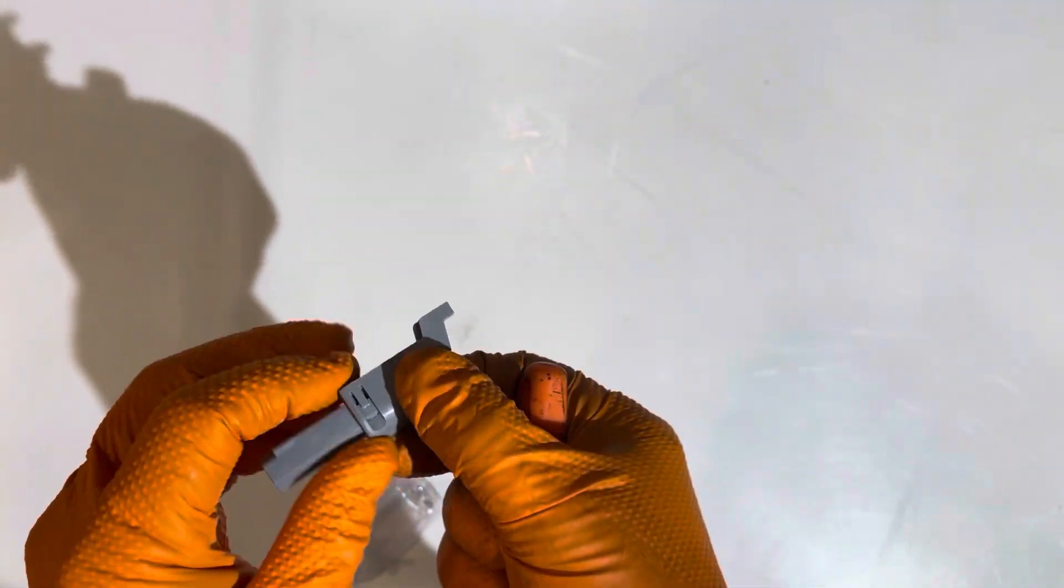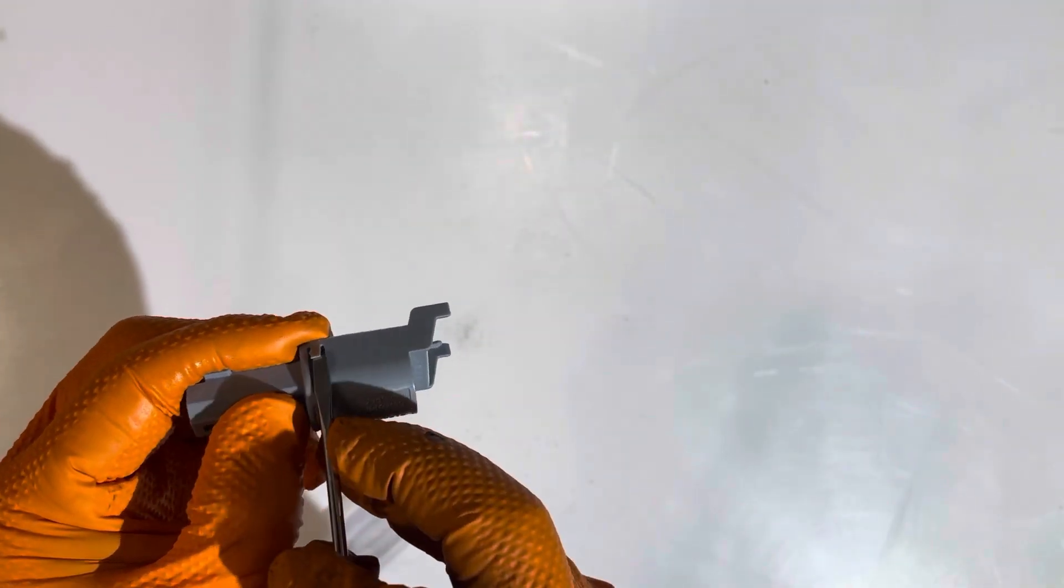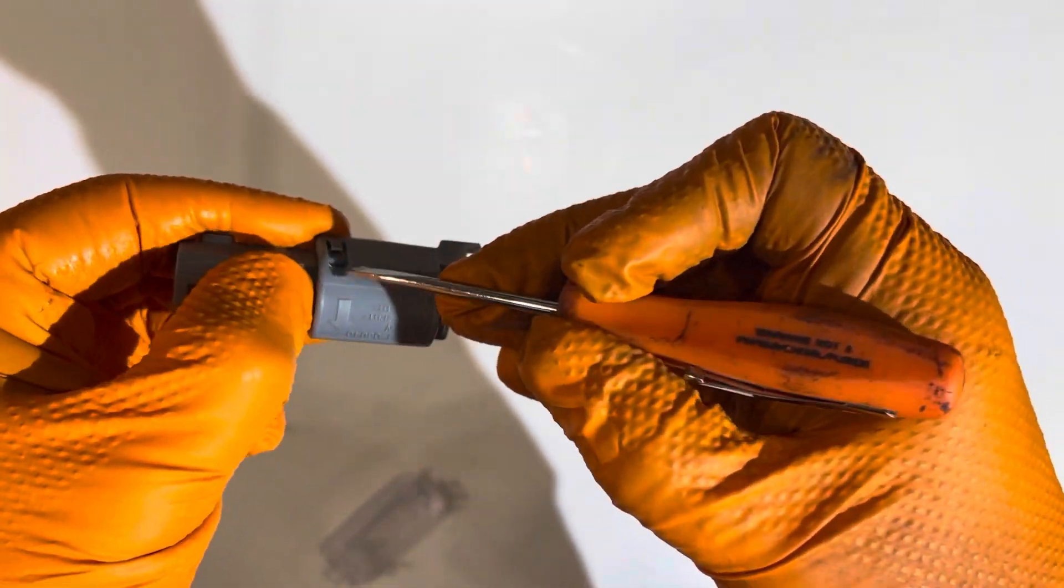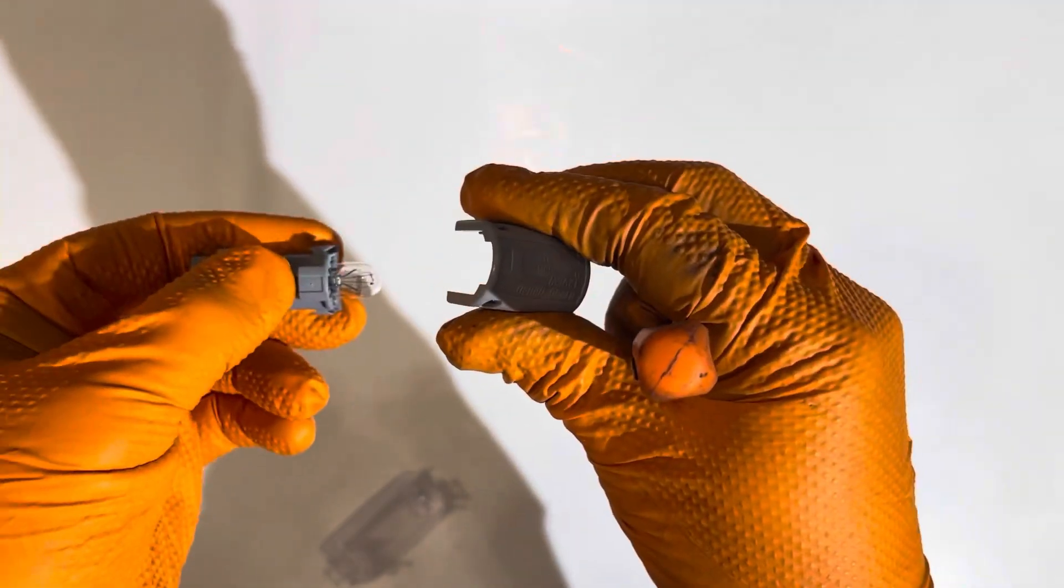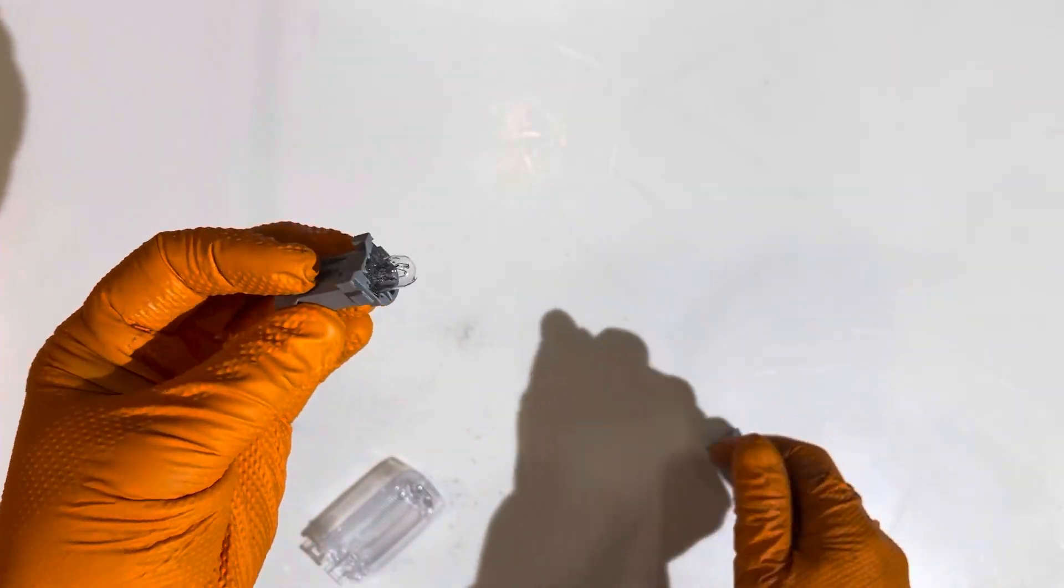And then there is our little light bulb. To get to it we can take this cover off right here. Lift up on this tab, lift up on this tab, there we go. And now you can get to the bulb.